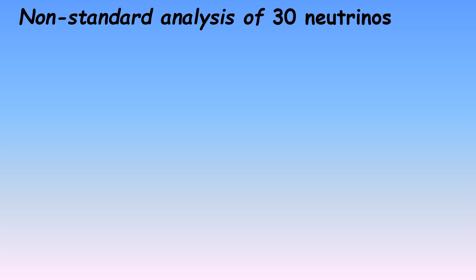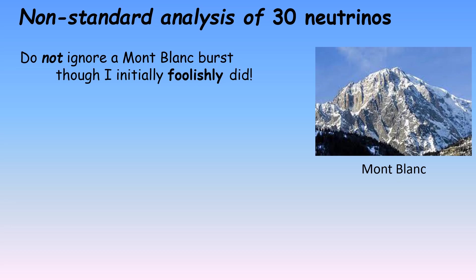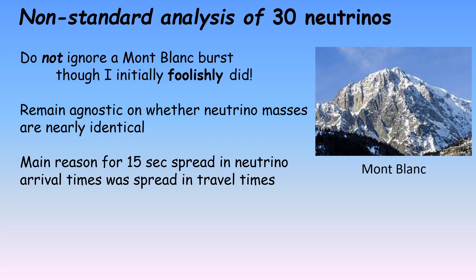In 2012 and 2013, I published a non-standard analysis of the 1987 neutrino data. Initially, I had ignored the five-hour early neutrino burst in the Montblanc detector, but later I understood how it could be included. The analysis remained agnostic on the near equality of the three neutrino masses and let the data speak for themselves. Most importantly, the analysis assumed that the main reason for the 15 second spread in neutrino arrival times was due to the spread in their travel times rather than their emission times from the supernova. These assumptions led to a rather remarkable result, namely that all 30 neutrinos clustered about three specific masses, one of which was imaginary, that is, with a negative mass squared.